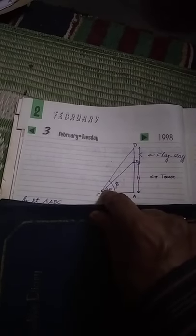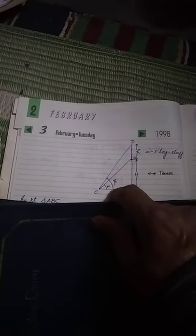If from this point, if you see the bottom of the flagstaff, angle is alpha, angle of elevation. And from the same point, if you see the top of the flagstaff, angle of elevation is beta.